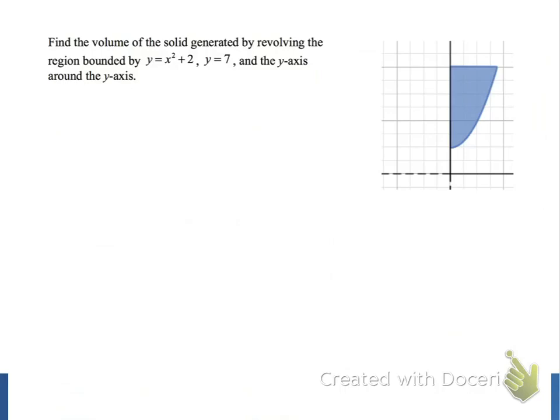We'll find the volume of the solid generated by revolving this two-dimensional region that's bounded by the graph of y equals x squared plus 2, which intersects the y-axis at y equals 2, by the line y equals 7, and also by the y-axis itself. This two-dimensional region is completely enclosed by those three lines.